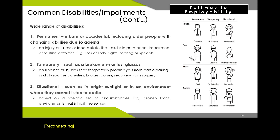Common disabilities cover a wide range including permanent disabilities, which are injuries, illnesses, or inborn states that result in permanent impairment, such as loss of limb, sight, hearing, speech, spinal cord injuries, and muscular dystrophy. Temporary disabilities are illnesses or injuries that temporarily prohibit daily activities, such as a broken arm or lost glasses, or post-surgical recovery. Situational disabilities are based on a specific set of circumstances, including environments that inhibit the senses, such as people in bright sunlight or in an environment where they may have an allergic or sensitivity reaction.